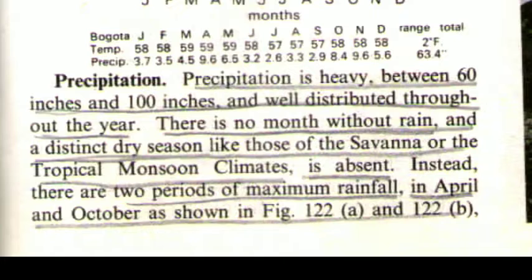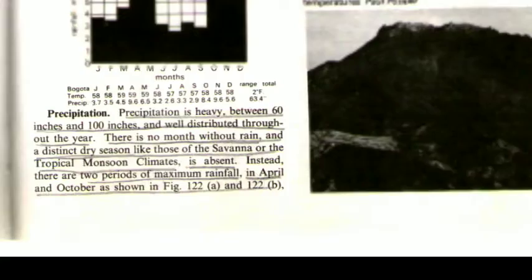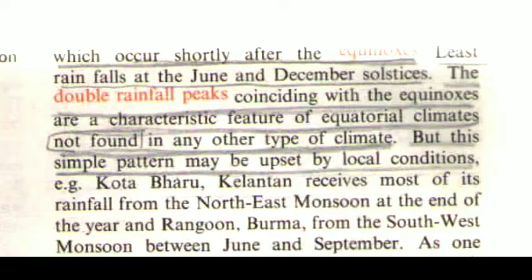Precipitation is heavy, between 60 inches and 100 inches, and well distributed throughout the year. There is no month without rain, and a distinct dry season like those of the savannah or the tropical monsoon climates is absent. Instead, there are two periods of maximum rainfall in April and October, which occur shortly after the equinoxes. Least rain falls at the June and December solstices.